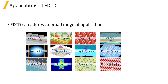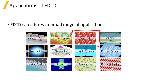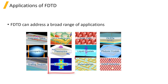Because FTTD is so versatile, it can address a wide range of applications. These include photonic crystals, plasmonics, CMOS image sensors, nanoparticle scattering and absorption, nanopatterned solar cells, OLEDs and LEDs, gratings, lithography, metamaterials and integrated optics, to name just a few. You will notice that all of these applications involve wavelength scale structure.